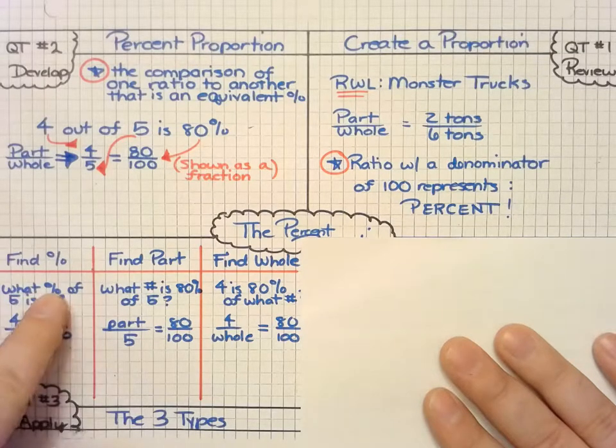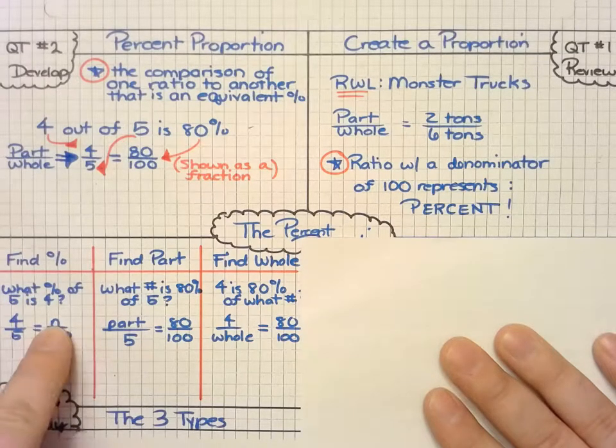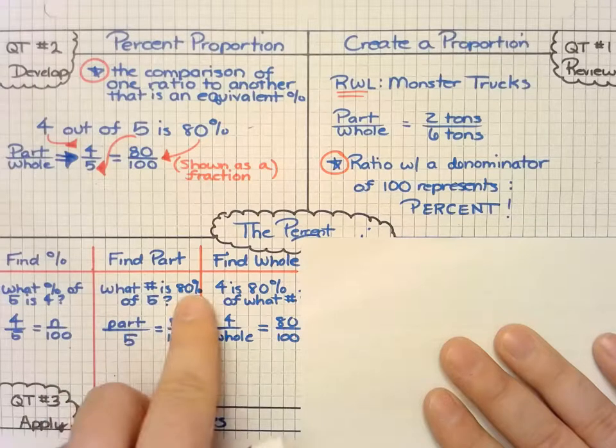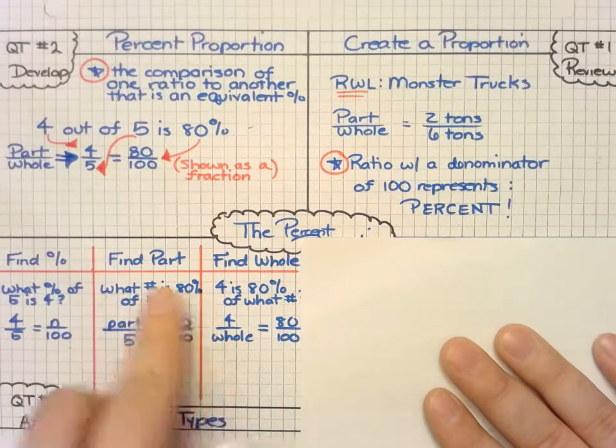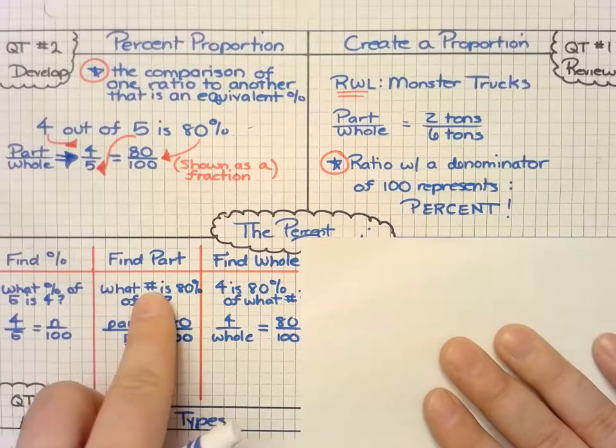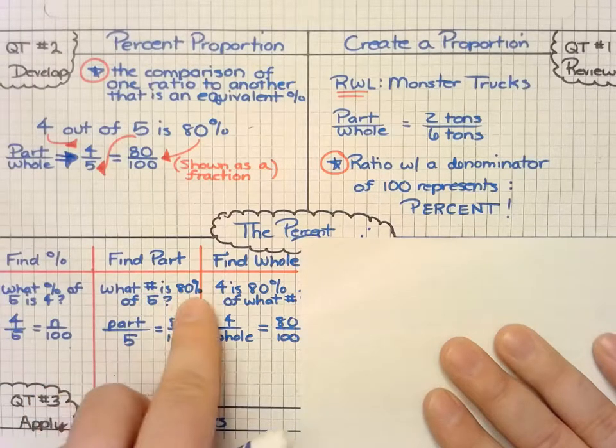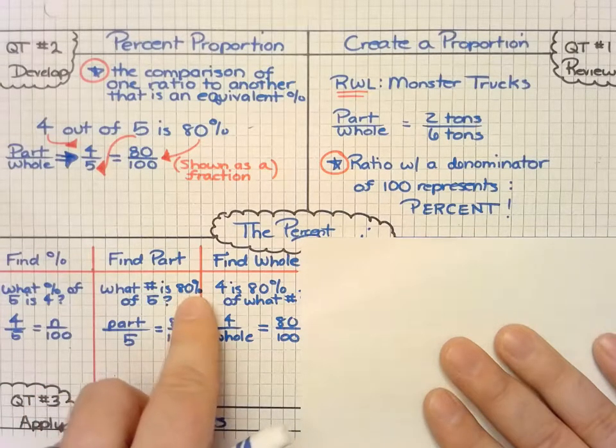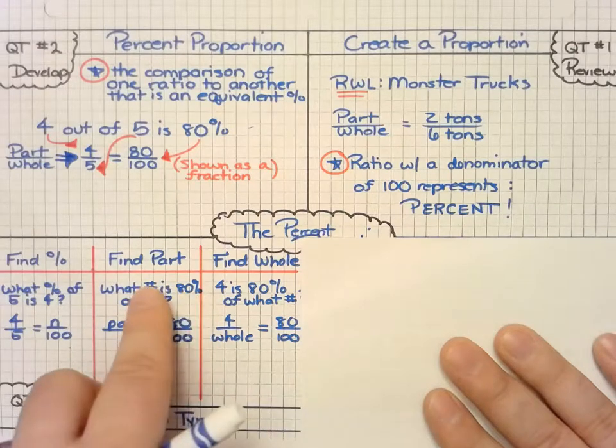So it says what percent, so I know I'm looking for the percent. What number is 80 percent? This may be confusing because you might think that five is the part, but it actually shows you that the number is 80 percent. Well, 80 percent is not the whole, so the number has to be across from the 80 percent.